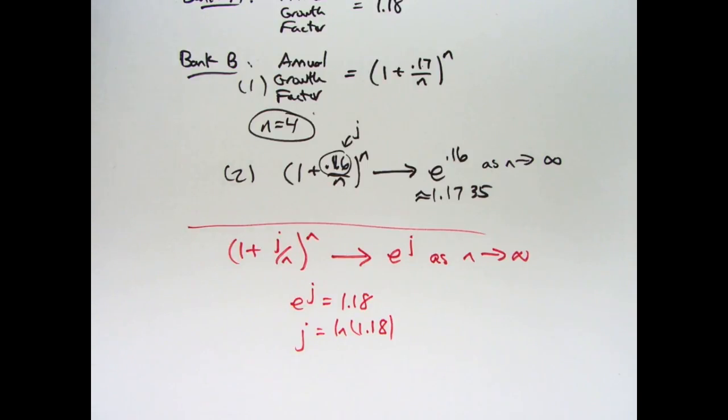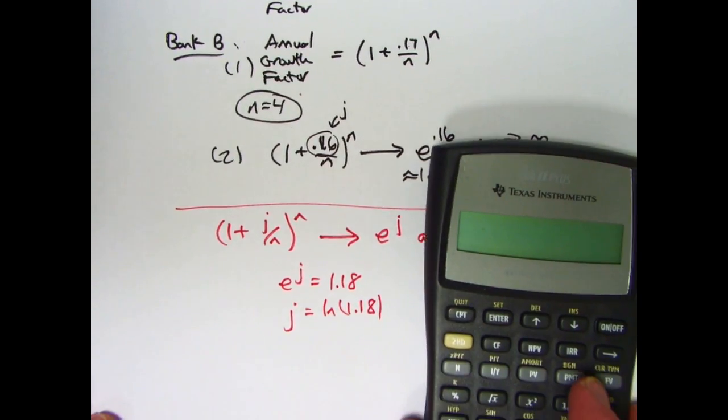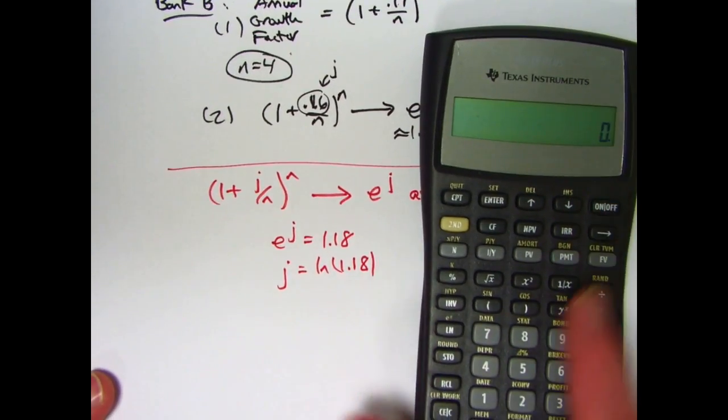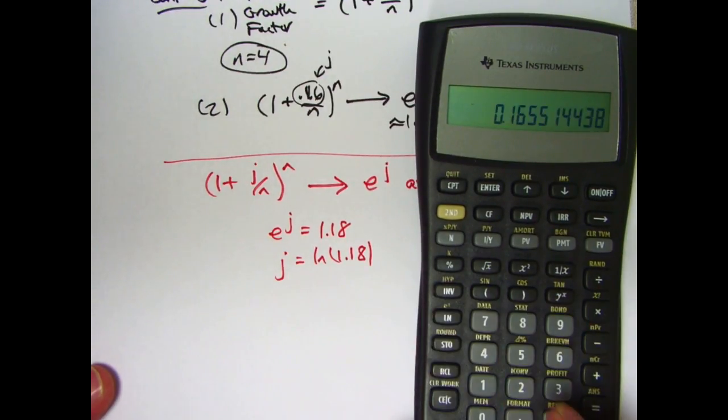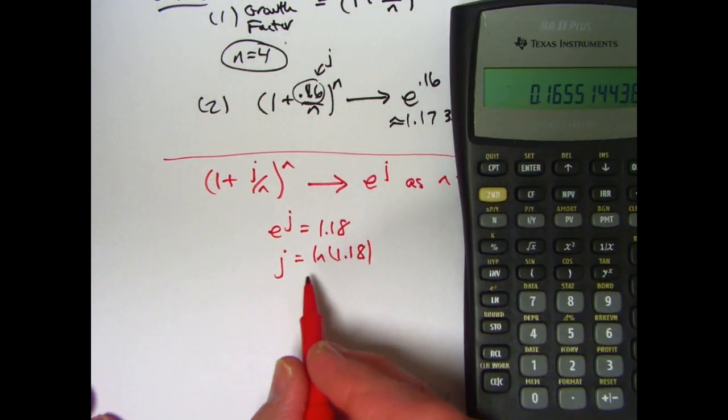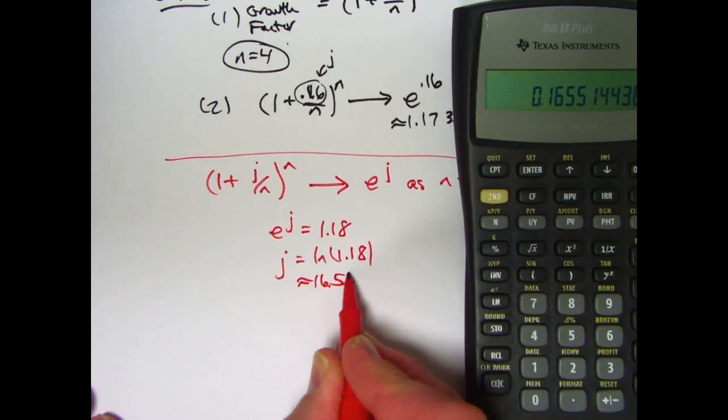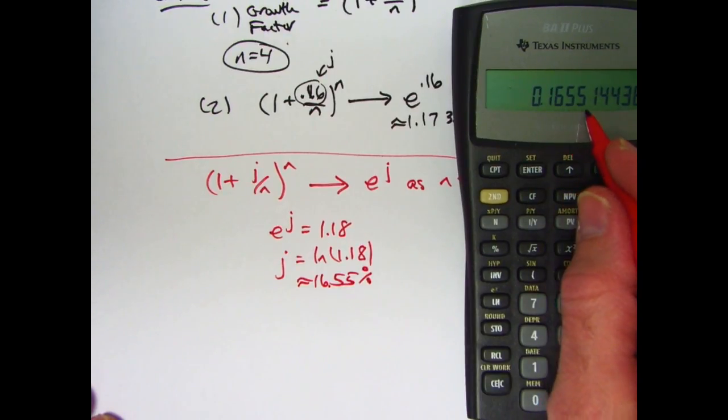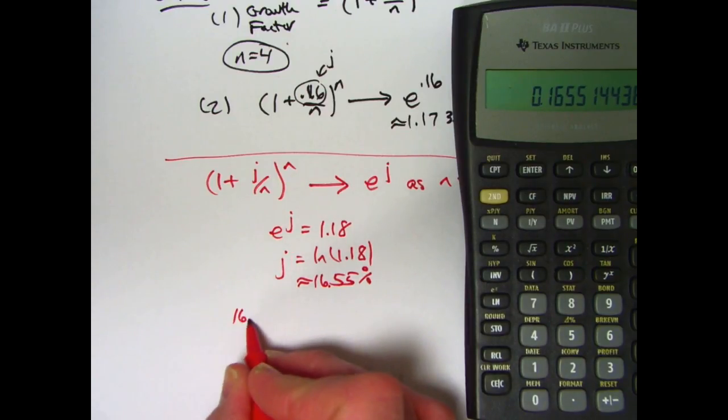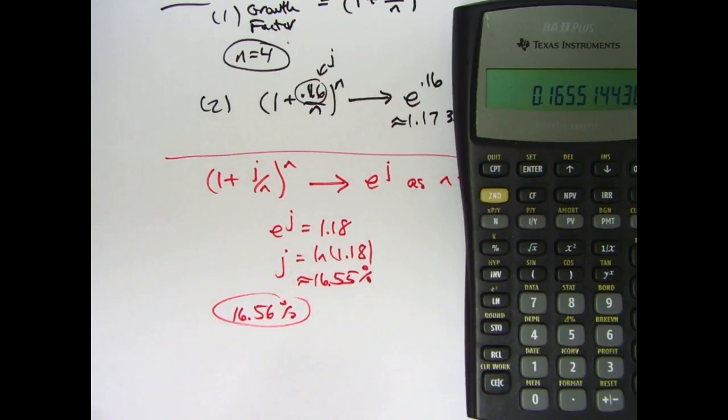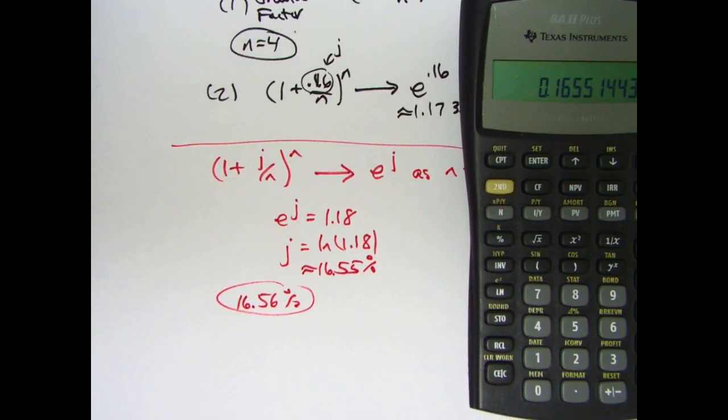So, any interest rate just barely bigger than that will have a certain number of compounding periods for which it can give you a better effective annual return than 18%. What is natural log of 1.18? Type 1.18, then hit the natural log button. 0.1655, about 16.55%. Technically, since it's 16.551 here, that wouldn't quite work. But certainly, 16.56% or higher, for example, would be an interest rate, a nominal interest rate, for which there would be a sufficiently high number of compounding periods per year to get your effective annual return bigger than 18%.